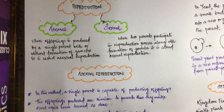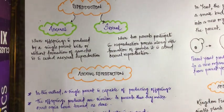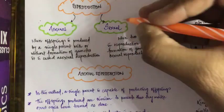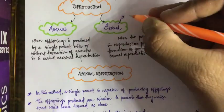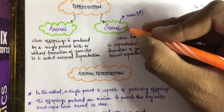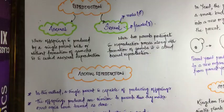Asexual reproduction involves only one single parent. Sexual reproduction is when two parents participate in the process of reproduction and produce gametes. This type is much more complex. The two parents involved are males and females — the male produces the male gamete and the female produces the female gamete.